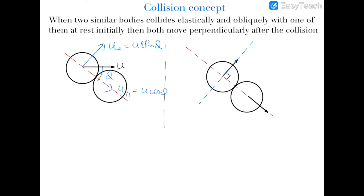After collision, the line-of-impact velocity components get interchanged: object B moves with velocity u_parallel = u·cosθ, and object A moves perpendicular to the line of impact with velocity u_perpendicular = u·sinθ. You can clearly see that they are moving perpendicular to each other. For this result, three conditions must be fulfilled: the collision must be elastic, the masses of the balls must be equal, and one ball must initially be at rest.